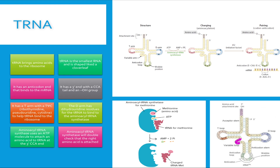Now let's talk a little bit about the structure of tRNA. It's made of about 75 to 90 nucleotides and it is in the shape of a cloverleaf. It's also the smallest RNA as well. It has an anticodon end that binds to the mRNA. It also has a 3' end with a CCA, also known as cytosine, cytosine, and adenine, along with a 3' OH.